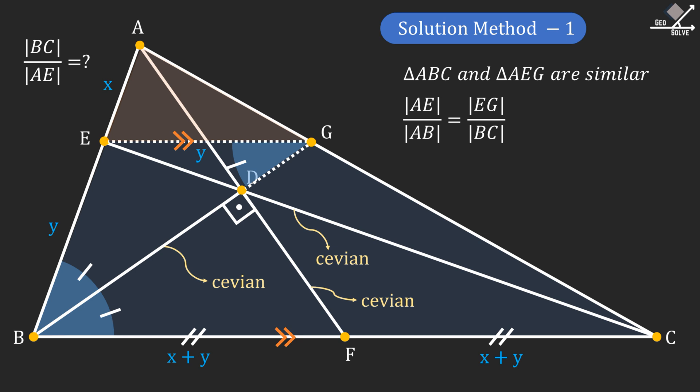Plugging in the values of the line segments, we will have X over X plus Y equals Y over 2 times X plus Y. And that will give us Y equals 2X.